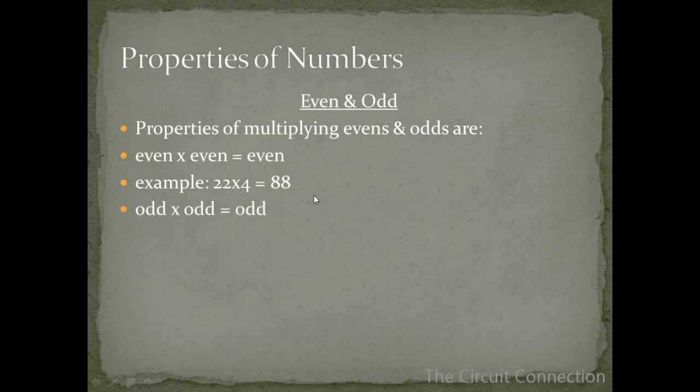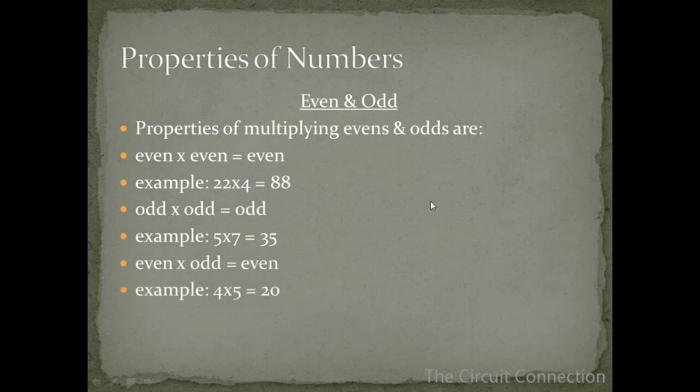An odd times an odd equals an odd. For example, 5 is odd times 7 is odd gives us 35 which is odd. An even times an odd gives us an even. For example, 4 is even times 5 is odd gives us 20 which is even.